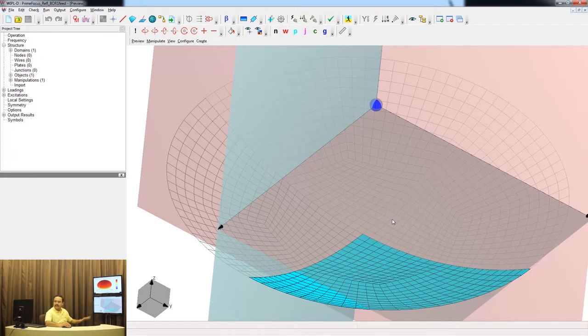So I have done this analysis. What I am going to show you is basically the pattern after the reflector, and as you could see on the screen now...